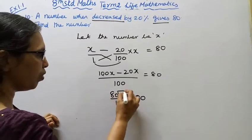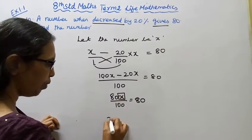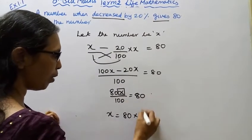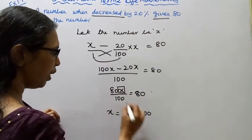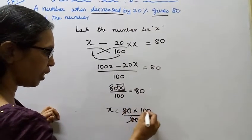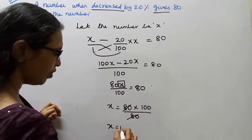Now to find x, multiply 80 by 100 over 80. Cancel 80, and x equals 100.